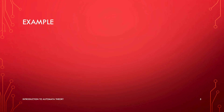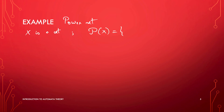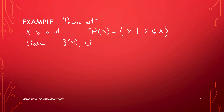The example is the power set. We have X as a set, and the power set P(X) consists of all subsets of X — including the full set X, the empty set, and any other subset of X. The claim is that if you take this power set with the union operation as addition, intersection as multiplication, the complement operation, the empty set as the zero element, and the full set X as the one element, this structure is a Boolean Algebra.